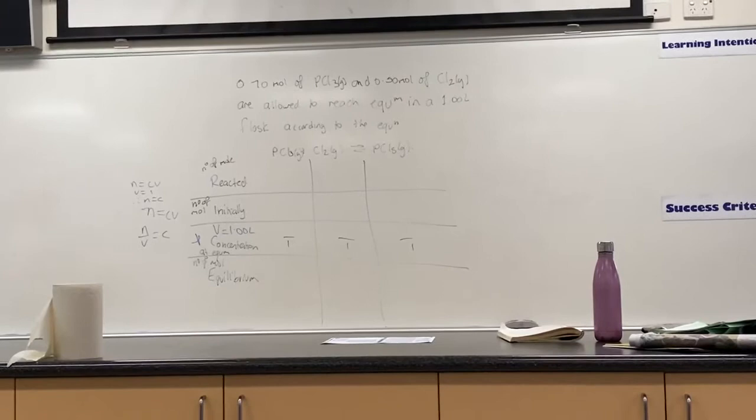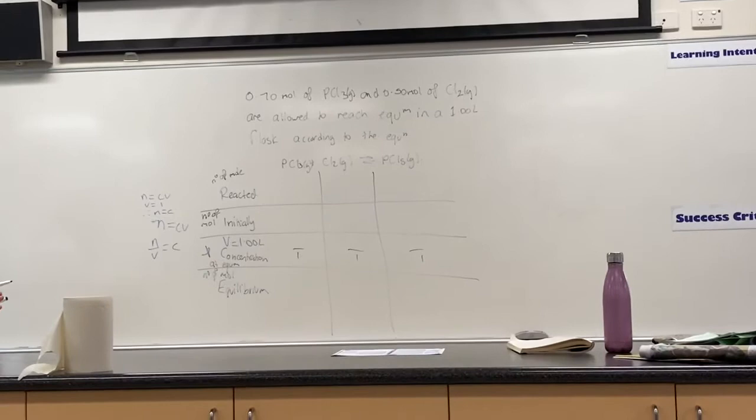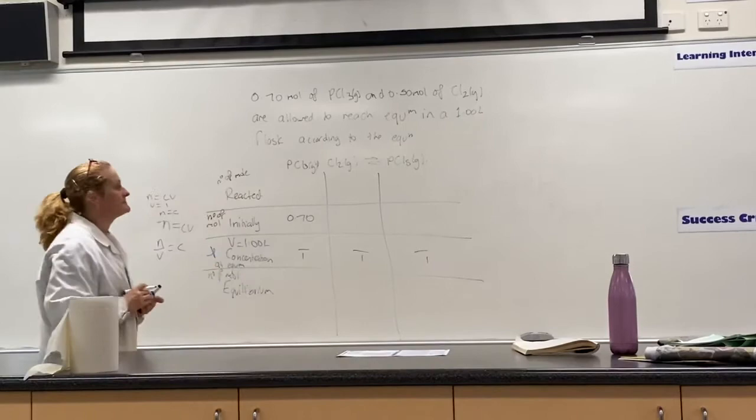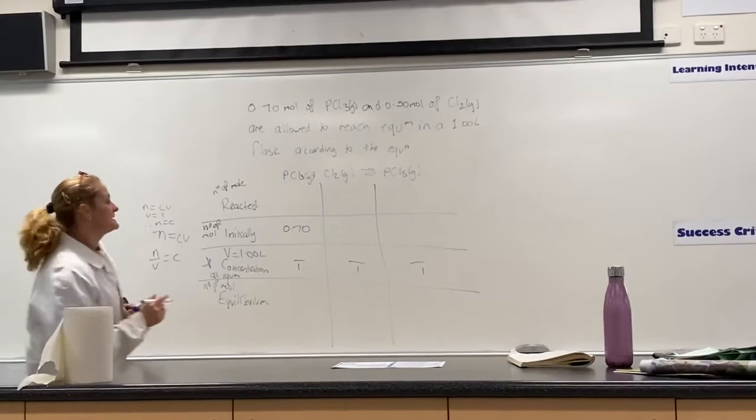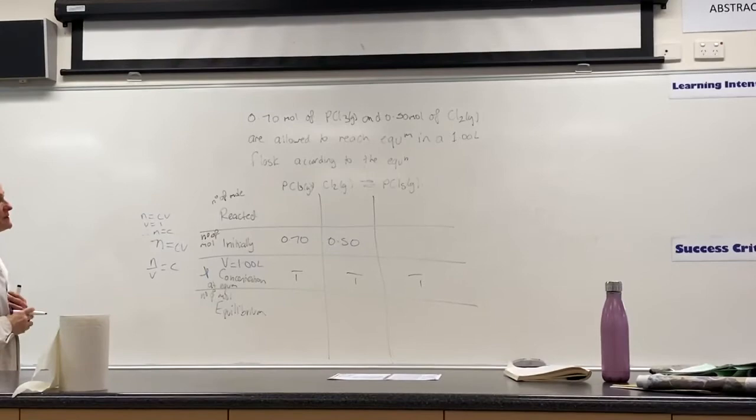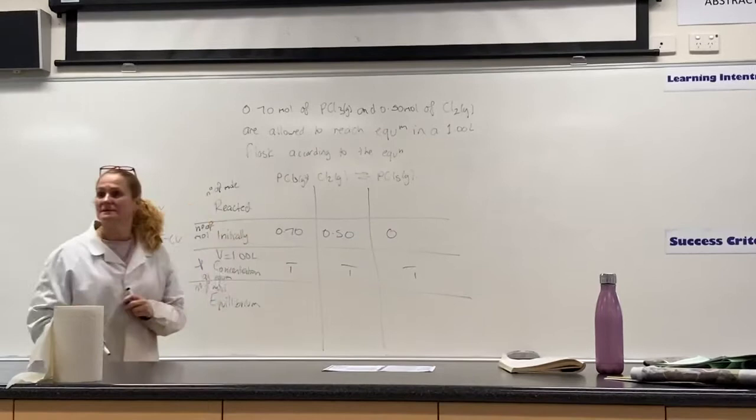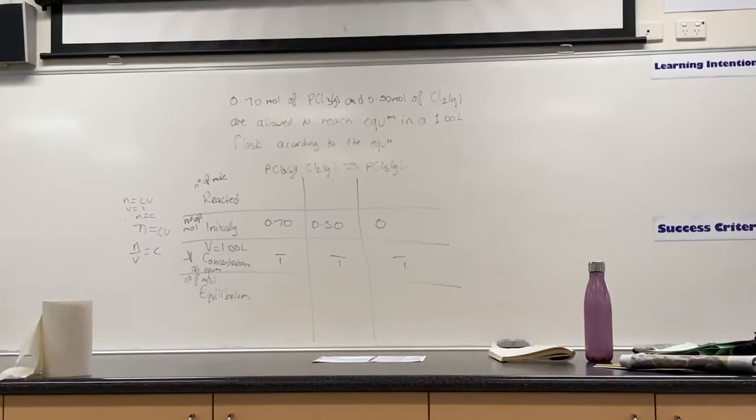So fill in the table. So it says 0.7 moles of PCl3. So initially we had 0.7 moles of that. And I'm putting them in underneath their equations. And 0.5 mole of Cl2 are allowed to reach equilibrium in a one-liter container. So these two were reactants. So initially I actually had 0 mole of that because that's a product. I didn't put any product in there. Occasionally they will put a bit of product, but it's rare. Most of the time we don't have any product there. So we started with this and we have none of that.